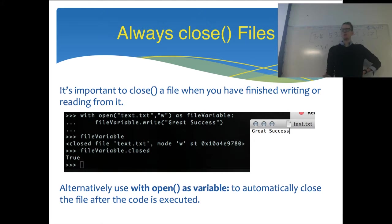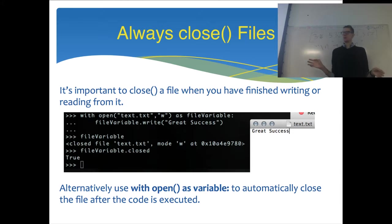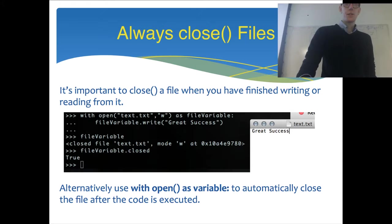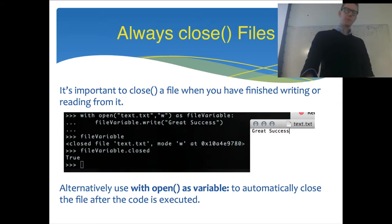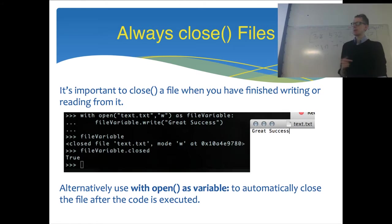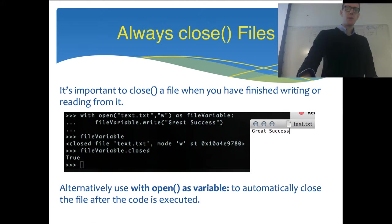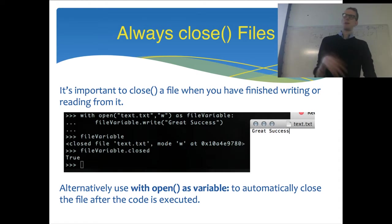When opening, writing, and closing a file, it can be a little laborious to do all those separate lines. You can use the with open command if you just want to write something small and have it automatically close when done. With open('text.txt', 'w') as file_variable: — that opens the file and assigns the file variable. After the colon and indentation you write to it, and when the indented code finishes, Python automatically closes the file. You can then check the file variable and see that it is closed.